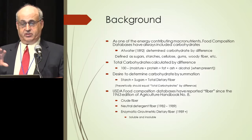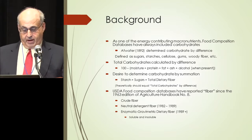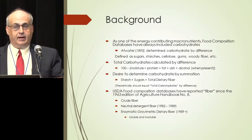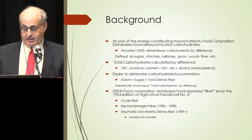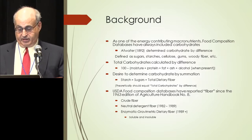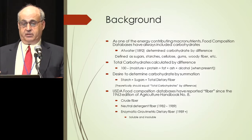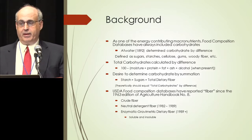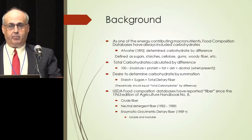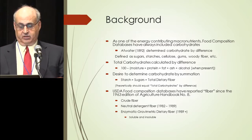Dr. Cho just gave a great summary of all the different fibers over the years. Initially, the 1963 edition of Handbook 8 started including fiber — at that time it was crude fiber. Starting in the 1980s we included neutral detergent fiber, and since 1989 we've been including the enzymatic gravimetric dietary fiber. Occasionally we had soluble and insoluble for a while, but there were analytical problems because the soluble and insoluble wouldn't add up — they generally exceeded the value for total. So these analytical issues keep popping up.